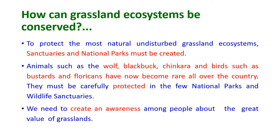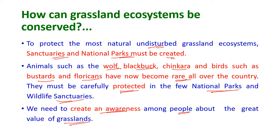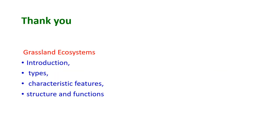To protect the most natural, undisturbed grassland ecosystems, sanctuaries and national parks must be created. Animals such as the wolf, blackbuck, chinkara, and birds such as bustards and floricans have become rare across the country and must be carefully protected in national parks and wildlife sanctuaries. We need to create awareness among people about the great value of grasslands. This video has covered the introduction, types, characteristic features, structure and functions of grassland ecosystems. Thank you.